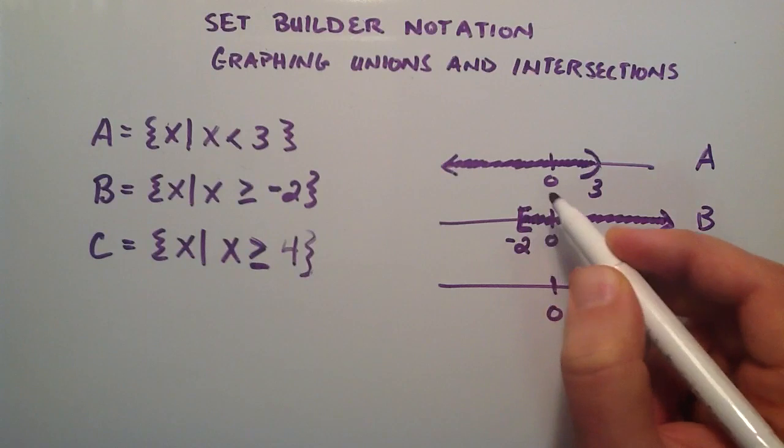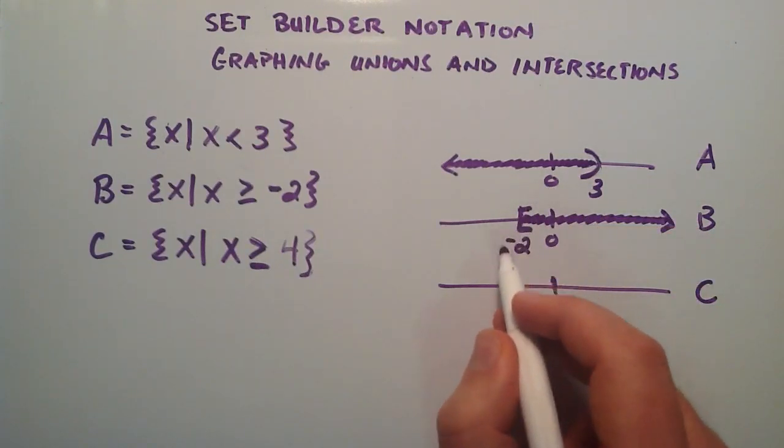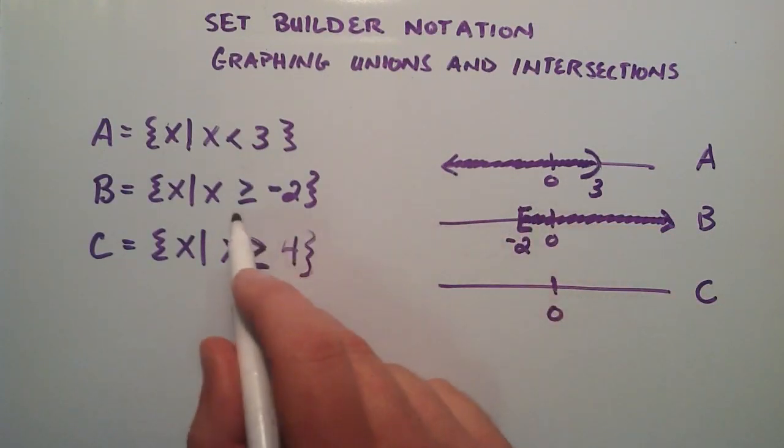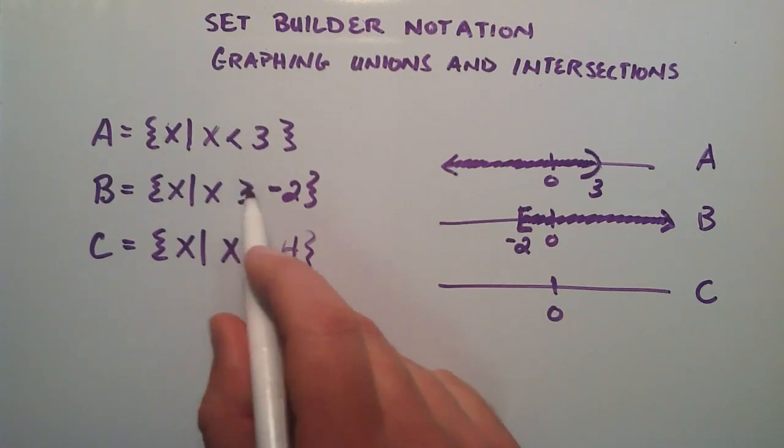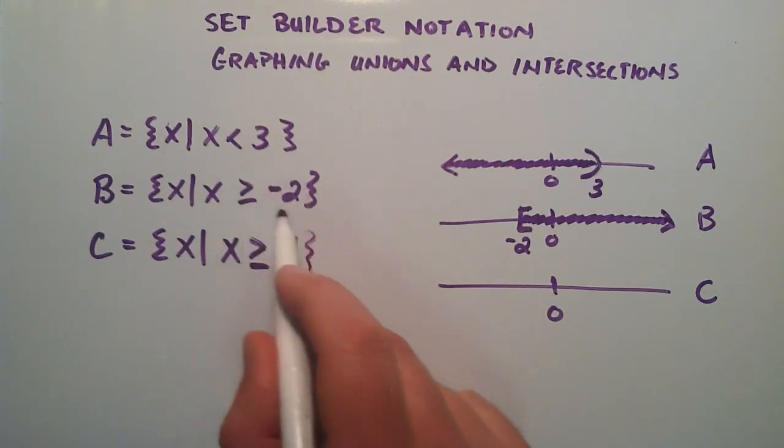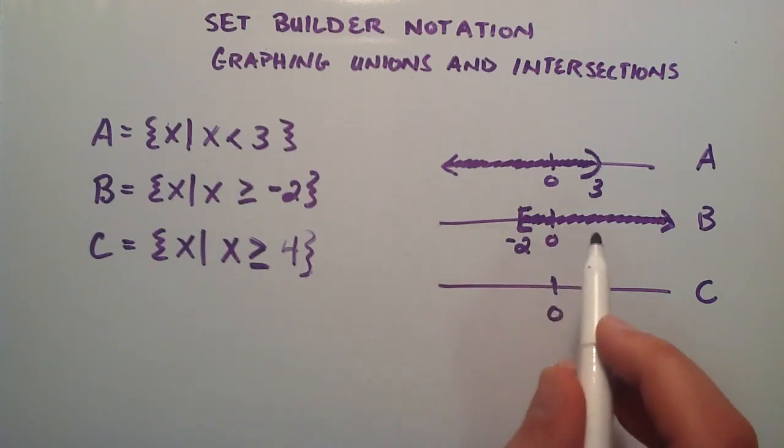The square bracket basically means that it can include the negative 2, which is the equal part of the greater than or equal to. So that is set B graphed on a number line.